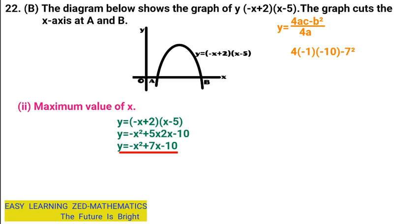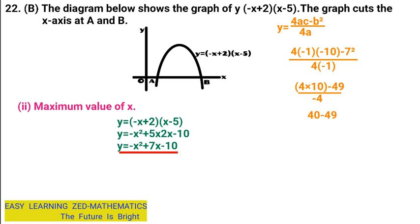So minus 7 squared is 49. Over 4a, where a is negative 1, giving me 4 times negative 1 equals negative 4. Then dealing with the brackets: negative 1 times negative 10 gives positive 10, multiplied by 4 gives 40. So I have 40 minus 49 over negative 4.